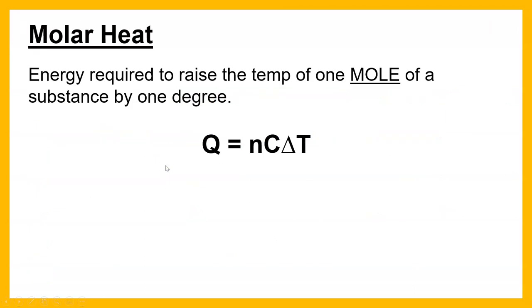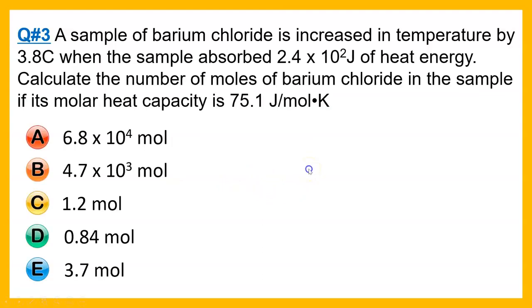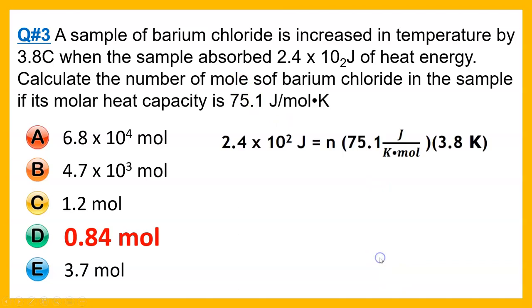Alright, next let's do a molar heat. We will use n cat. N for moles. We're told what the temperature change is. We're told what the Q value was. We know the molar heat capacity. So we're just solving for moles. And I find that n is 0.84 moles. I hope you can see that these problems are not very different. It's just using moles instead of grams.